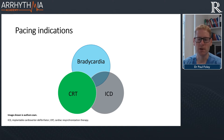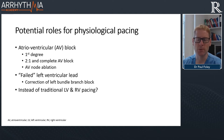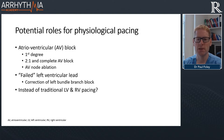Often more than one indication is present in patients. Where does physiological pacing come in? The first major indication is atrioventricular block. Patients with pronounced first-degree AV block may experience right ventricular pacing even with algorithms designed to minimise it. In patients with 2:1 and complete AV block, or those who've had an AV node ablation, we expect a very high burden of RV pacing, which can be associated with pacing-induced cardiomyopathy.